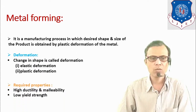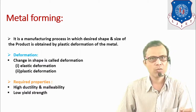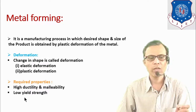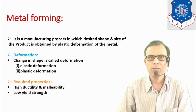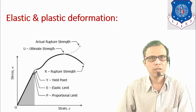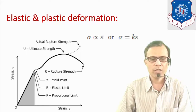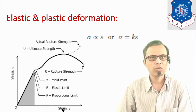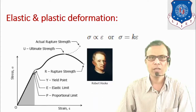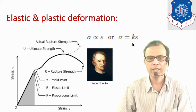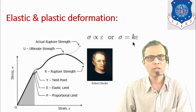Desirable properties for metal forming should be high ductility and malleability, and the material should have low yield strength. Let us understand the concept in detail with the stress-strain diagram. Up to point P, stress is directly proportional to strain, which was first noticed by Robert Hooke and is also known as Hooke's law. Removing the proportionality, k is the constant known as Young's modulus.